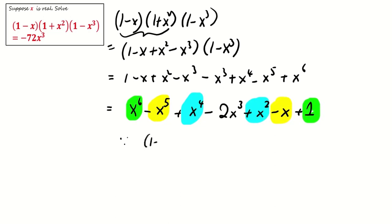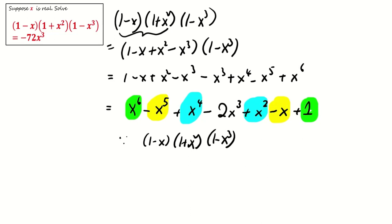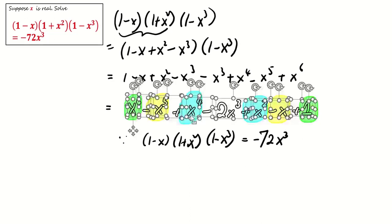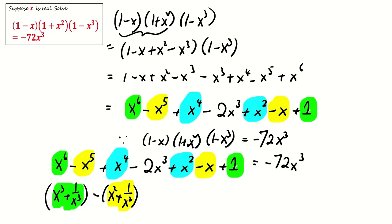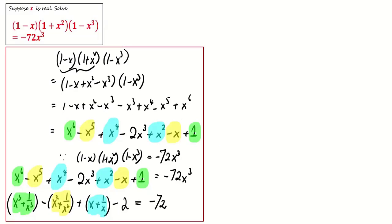Recalling the equation: 1 minus x times 1 plus x squared times 1 minus x cubed equals negative 72x cubed. Since the left-hand side equals this symmetric polynomial, we may divide both sides by x cubed. This gives x cubed plus 1 over x cubed for the green terms, x squared plus 1 over x squared for the yellow terms, minus 2 for the middle term, and the right-hand side becomes negative 72.